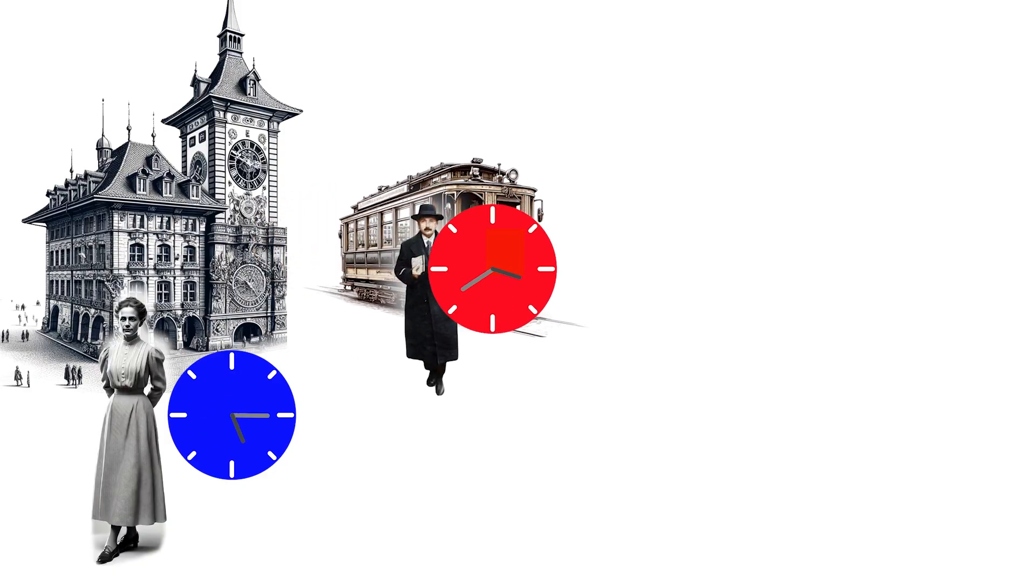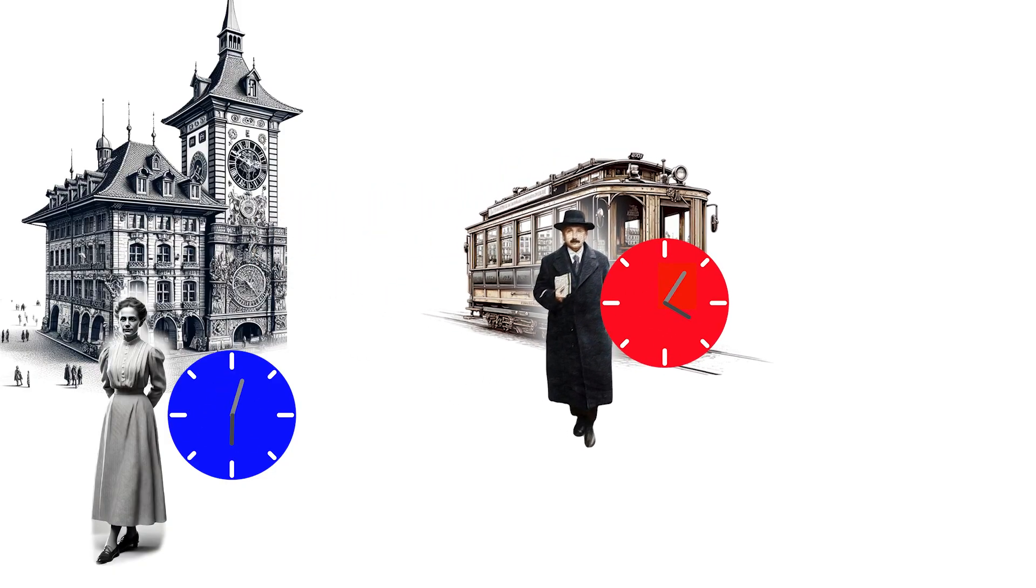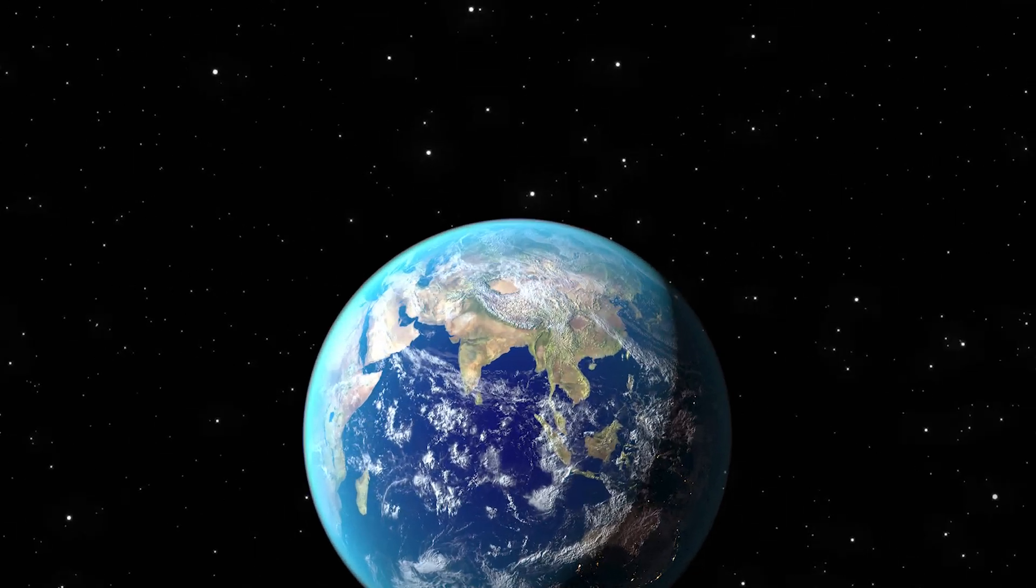As we've seen, the three dimensions of space and one of time are interchangeable. Mileva's world has different time and space compared to Albert's because Albert is moving fast.